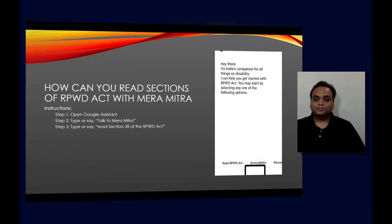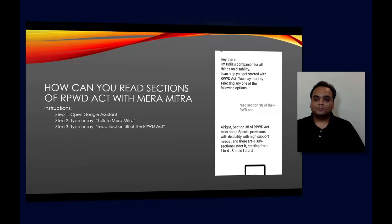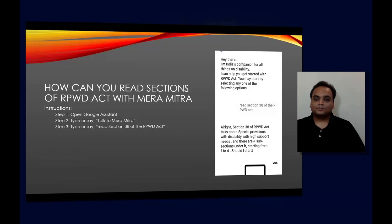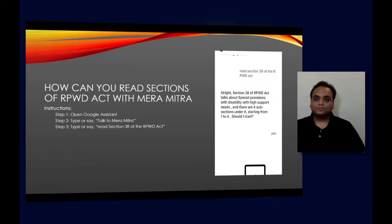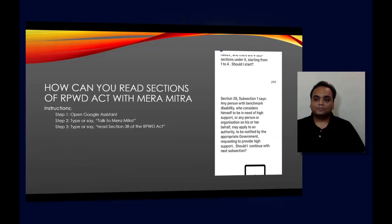Mera Mitra responds: Section 38 of RPWD Act talks about special provisions for persons with disability with high support needs, and there are four subsections under it starting from 1 to 4. Subsection 1 says: any person with benchmark disability who considers himself to be in need of high support, or any personal organization on his or her behalf, may apply to an authority to be notified by the appropriate government requesting to provide high support. Should I continue with the next subsection?